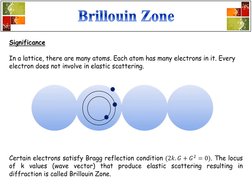Significance: in a lattice there are many atoms, and each atom has many electrons in it. Every electron does not involve in elastic scattering. Certain electrons satisfy the Bragg reflection condition. The locus of K values — that means wave vector values — that produce elastic scattering resulting in diffraction is called the Brillouin zone.